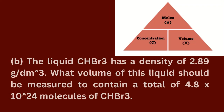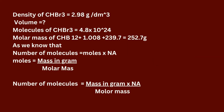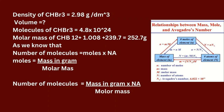Question 3b: The liquid CHBr3 has a density of 2.89 grams per cubic decimeter. What volume of this liquid should be measured to contain a total of 4.8 × 10²⁴ molecules of CHBr3? Given: density of CHBr3 = 2.89 grams per cubic decimeter. Number of molecules of CHBr3 = 4.8 × 10²⁴. Find: volume.